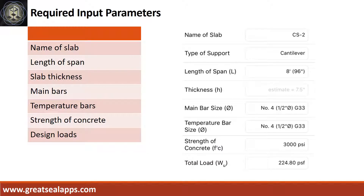Enumerate input parameters required. Name of slab: CS2. Type of support: cantilever. Length of span: 8 feet. Slab thickness: 7.5 inches. Main bars and temperature bars: 1.5 inch diameter at grade 33. Strength of concrete: 3000 PSI. And total load: 224.8 PSF.